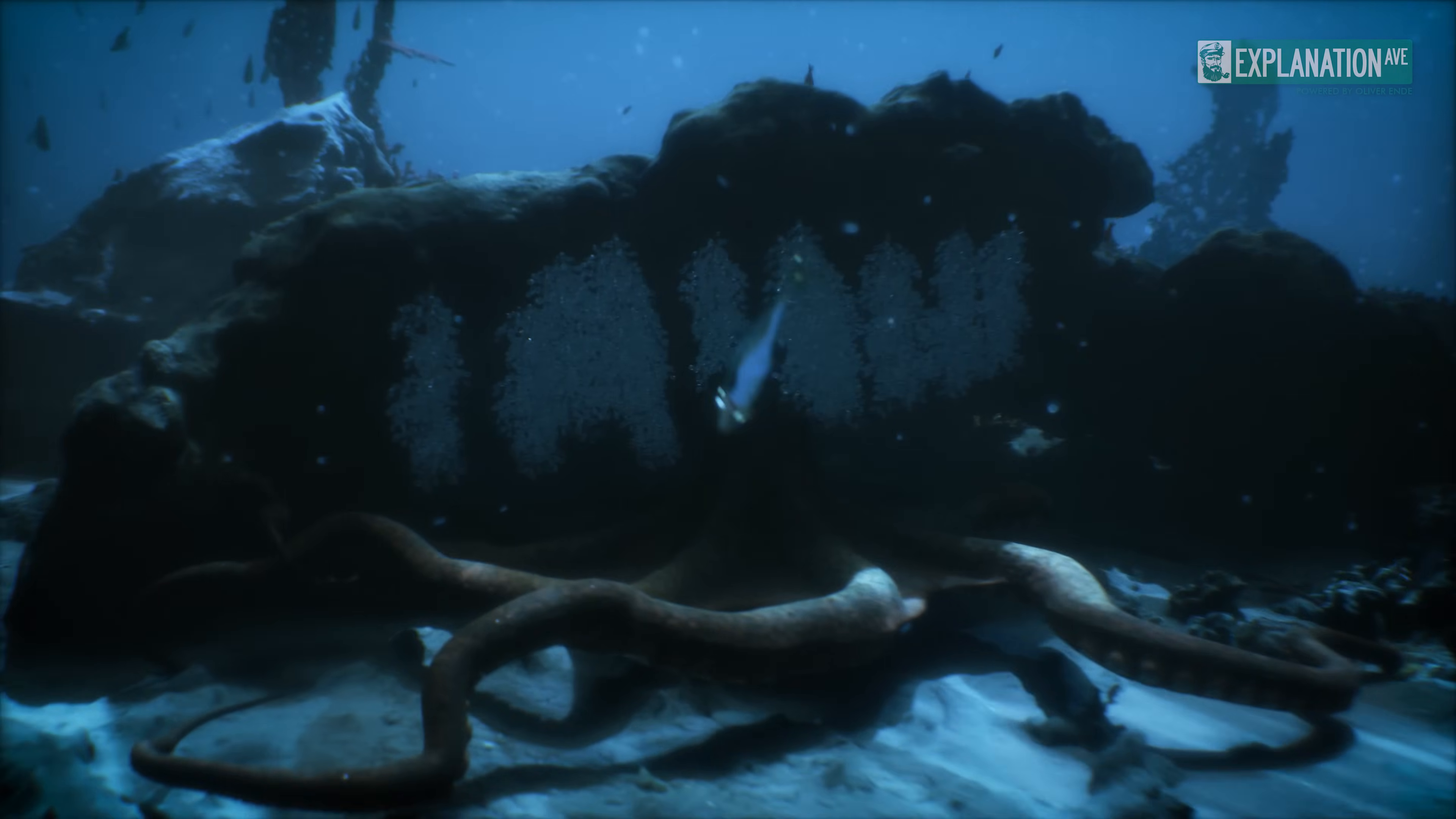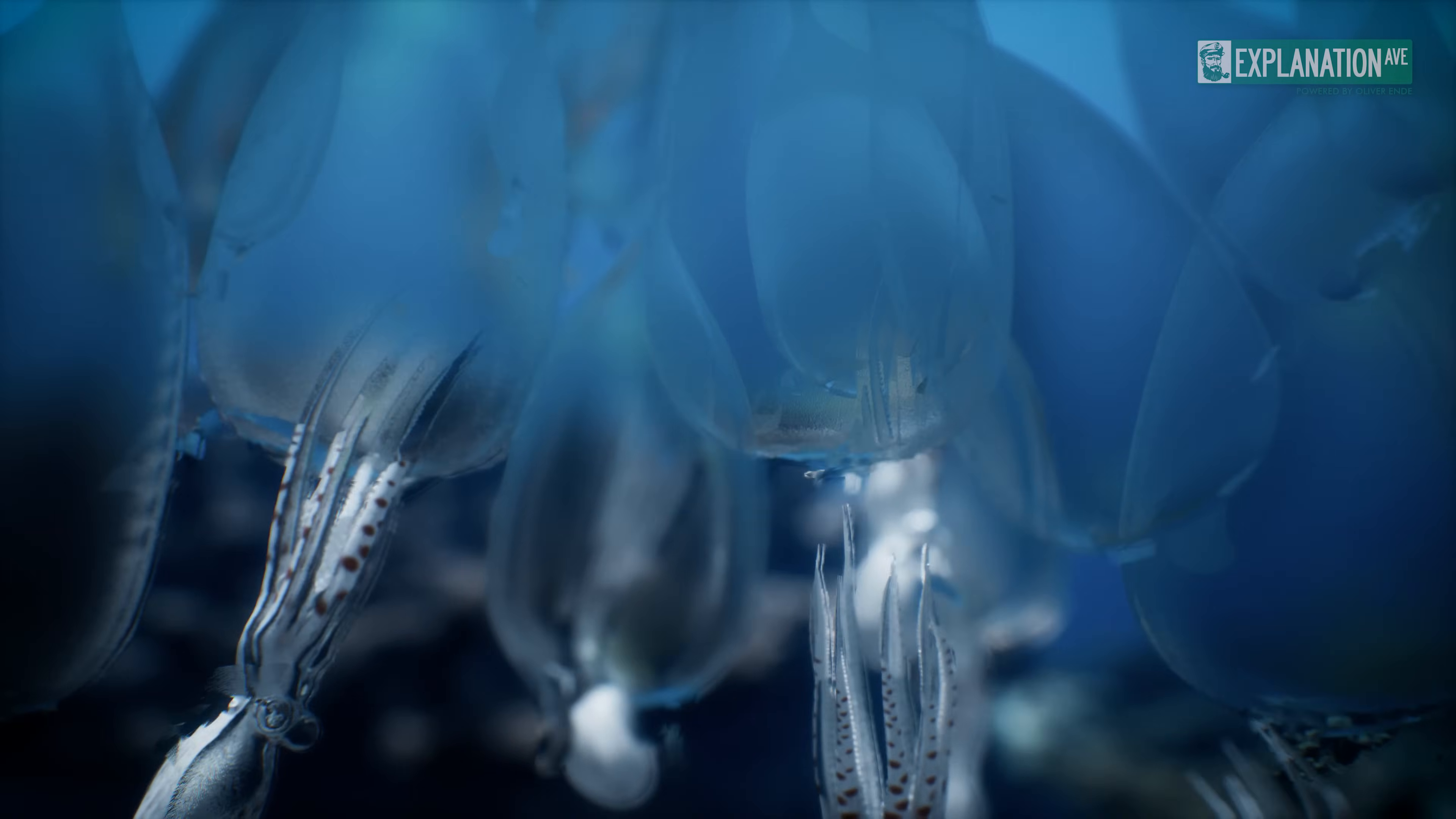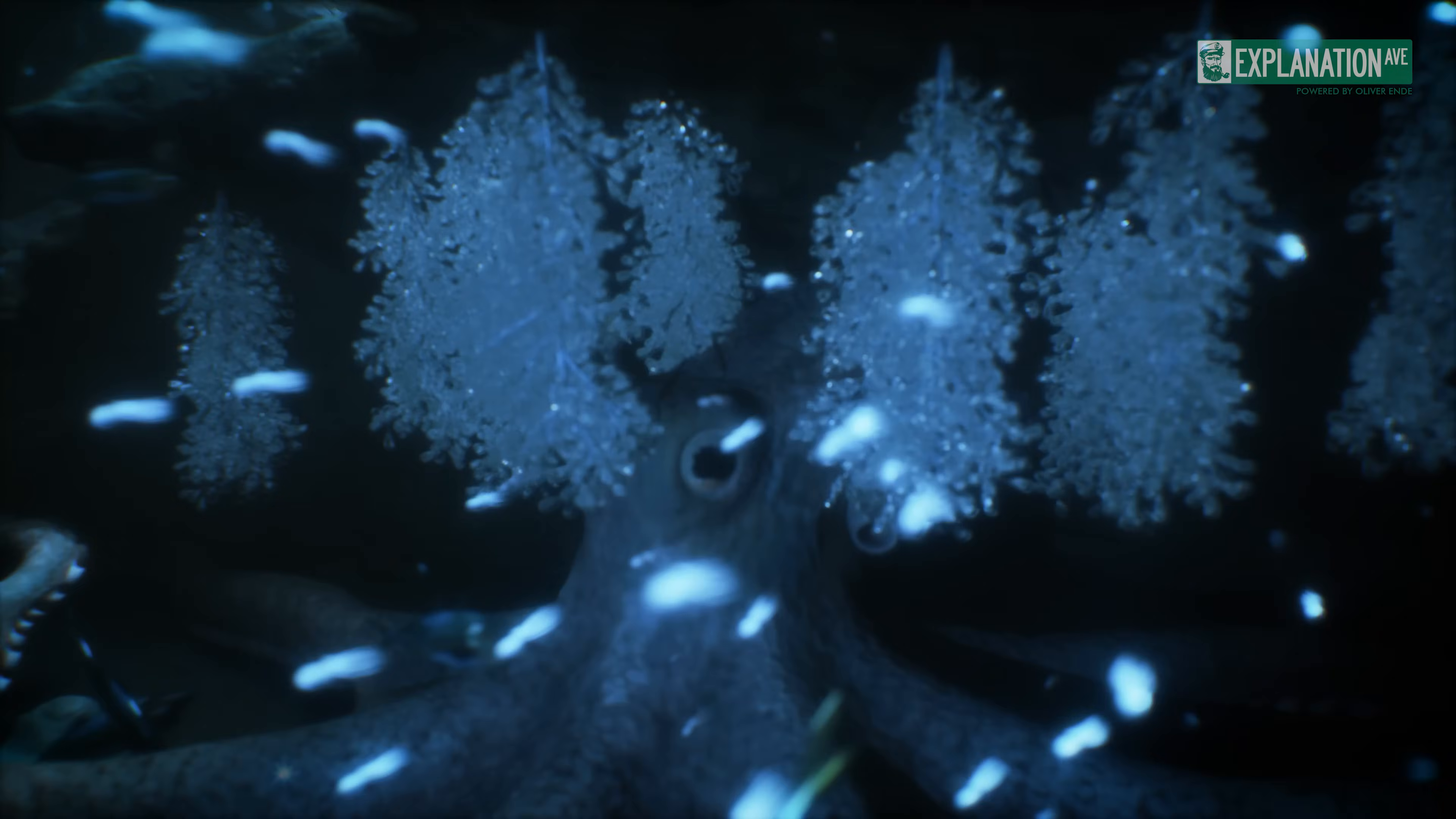After the sexual act, the females of some species eat the males. After laying hundreds of thousands of eggs in a cave, they guard them for one to two months and do not eat during this time. As soon as the young octopuses hatch, the females also die.